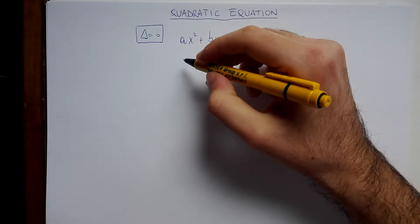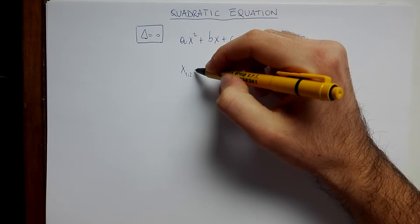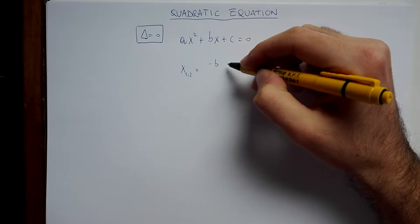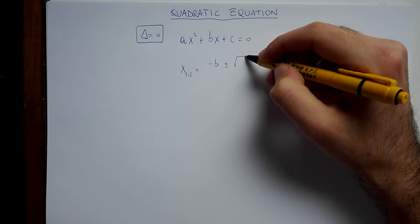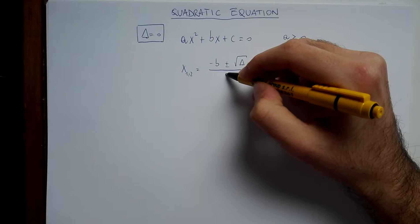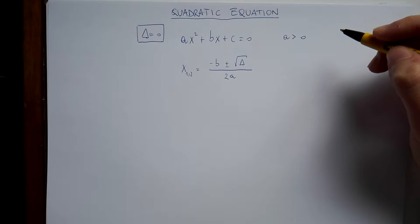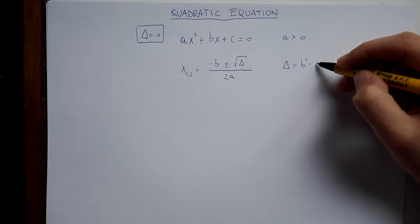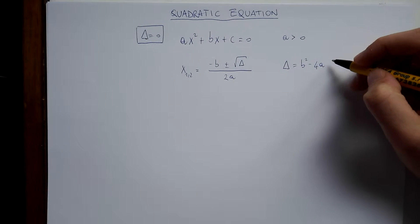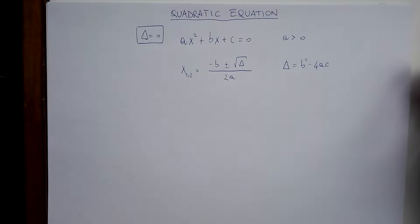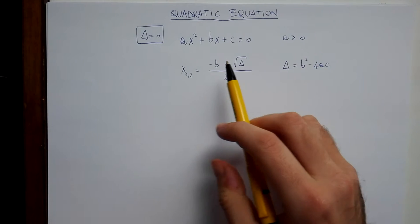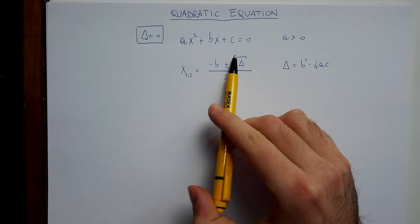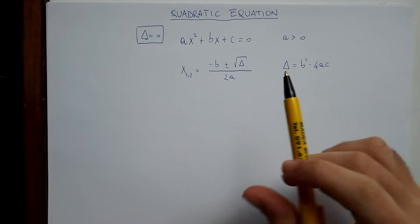We know that the general formula is minus b plus or minus square root of delta divided by 2a, where delta is b squared minus 4ac. In this case delta is zero, so we will see that this term vanishes.